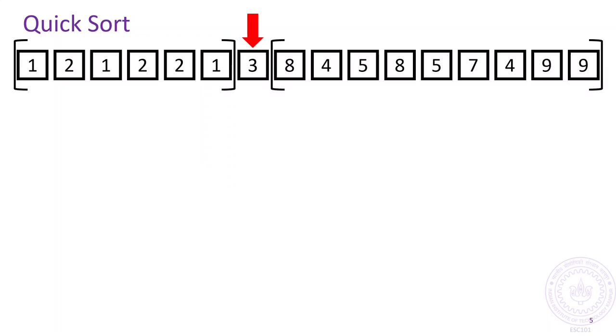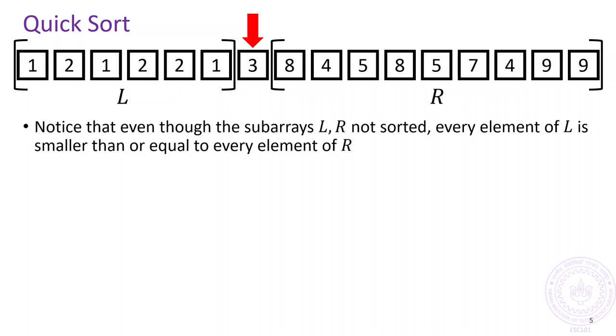Now that we know about this partitioning idea, the quicksort algorithm is very easy to explain. Given an unsorted array such as this, we choose a pivot element and partition the array with respect to the pivot. That gives us two smaller arrays, let's say L and R.